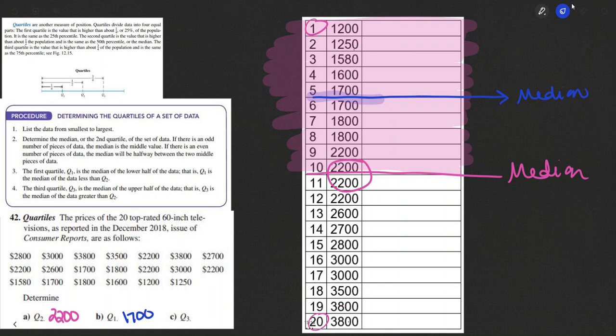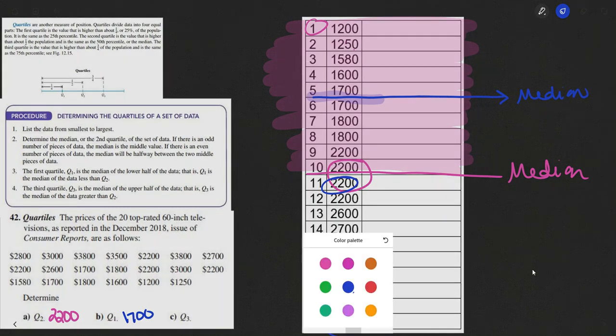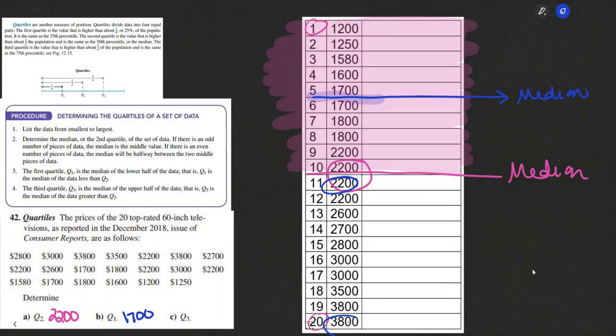And then if I look at the upper numbers, so from 2200 up to 3800, the median there—counting the positions—it's going to be the median of that upper half of the numbers, which is going to be what lies between 2800 and 3000.